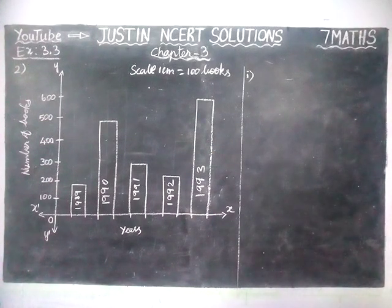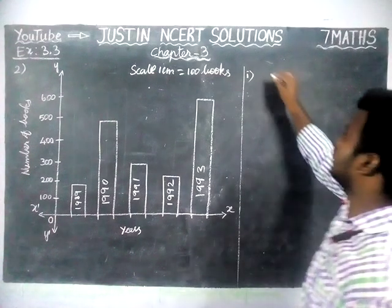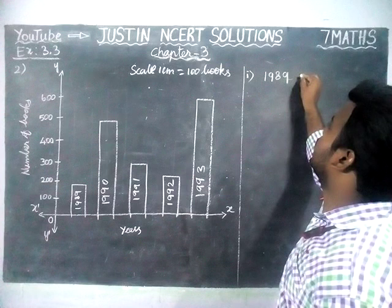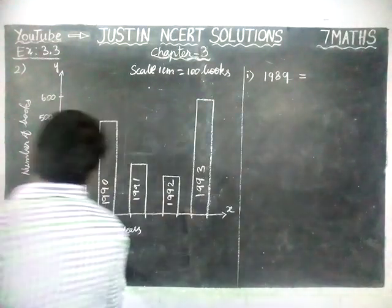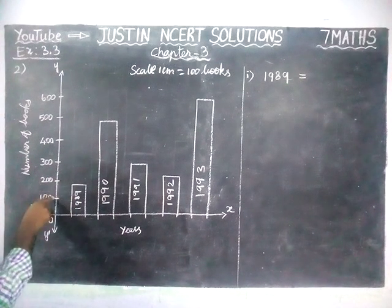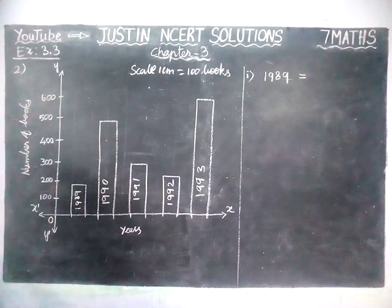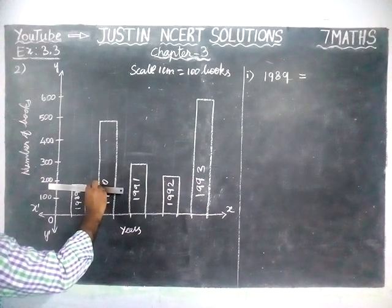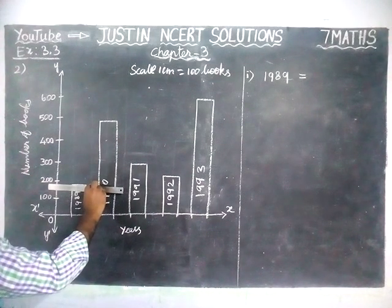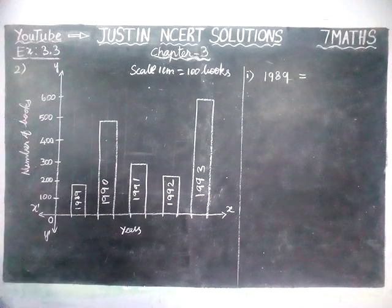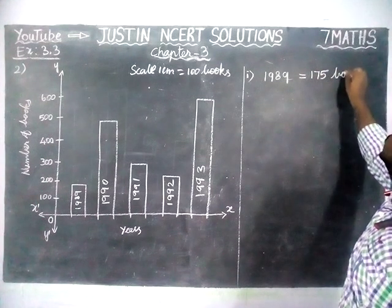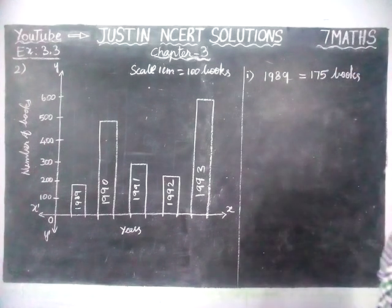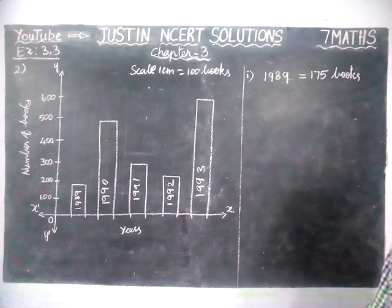First question: How many books were sold in 1989? For 1989, the bar is above 100 and below 200. Checking by using the scale, this is most probably near 175. So the answer is approximately 175 books.